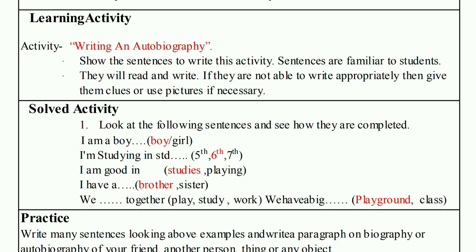Show the sentences to write this activity. These sentences are familiar to students; they will read and write. If they are not able to write appropriately, then give them clues or use pictures if necessary. Teachers can give clues, show one or two pictures, or give words orally to help students complete the activity.